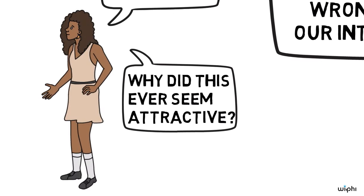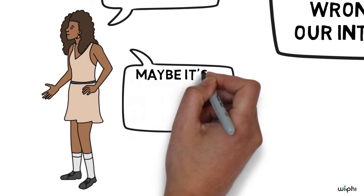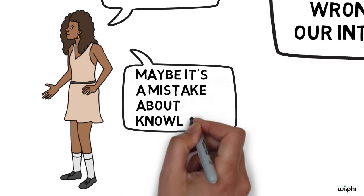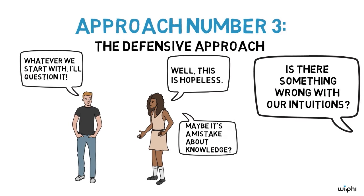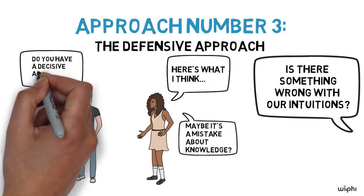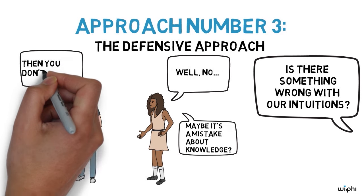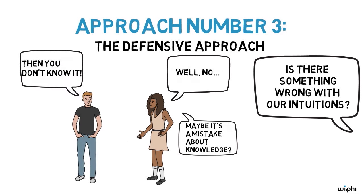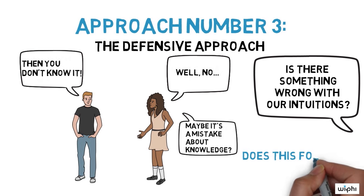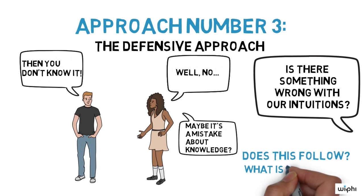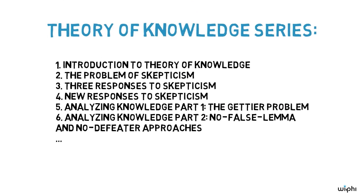Advocates of the defensive approach try to identify the factors that made skepticism look appealing. One possible factor is that the skeptic somehow leads us into making some kind of mistake about what knowledge is. Maybe the skeptic challenges us to provide a decisive argument for something we believe, and some psychological quirk makes us feel that we can't know something unless we can produce a decisive argument for it. If decisive arguments aren't really required for knowledge, however, then the skeptic is misleading us. So one way to build up our defenses against skepticism would be to get a better picture of what knowledge itself really is. The next few videos in this series take a closer look at positive accounts of the nature of knowledge.